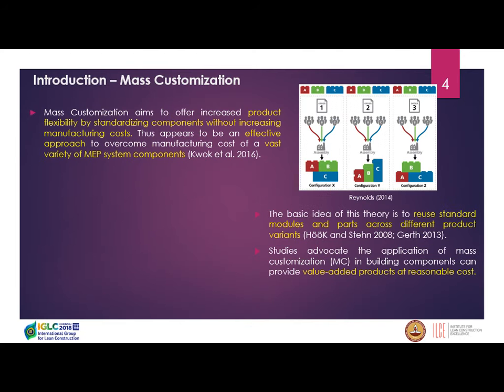The basic theory of mass customization aims to offer increased product flexibility by standardizing components without increasing manufacturing cost. As shown in this figure, there are three products X, Y, Z — different in their own kinds but using some same standardized modules like A, B, C. If we have thousands of products manufactured using standardized components, it results in a great reduction in cost and time.